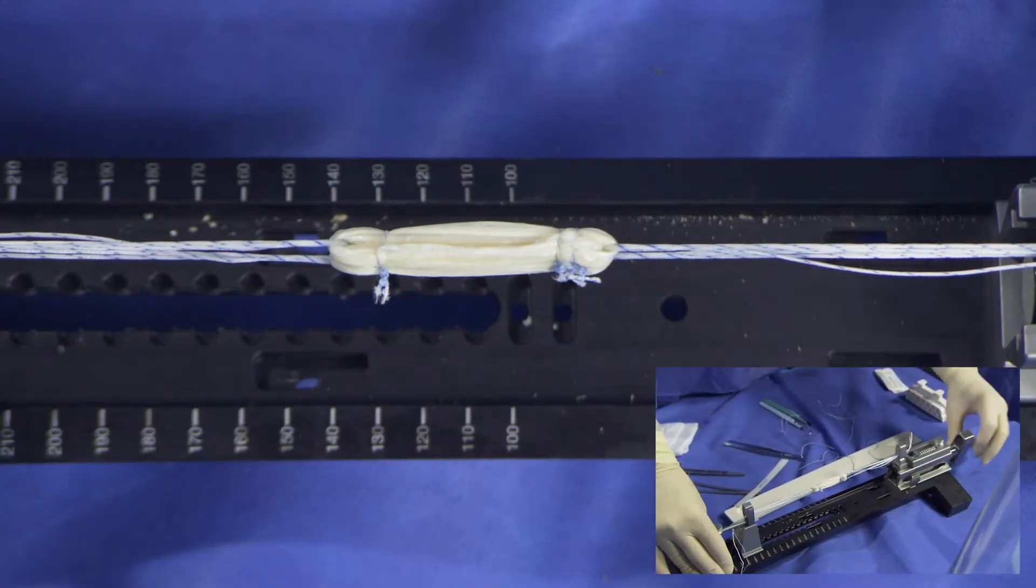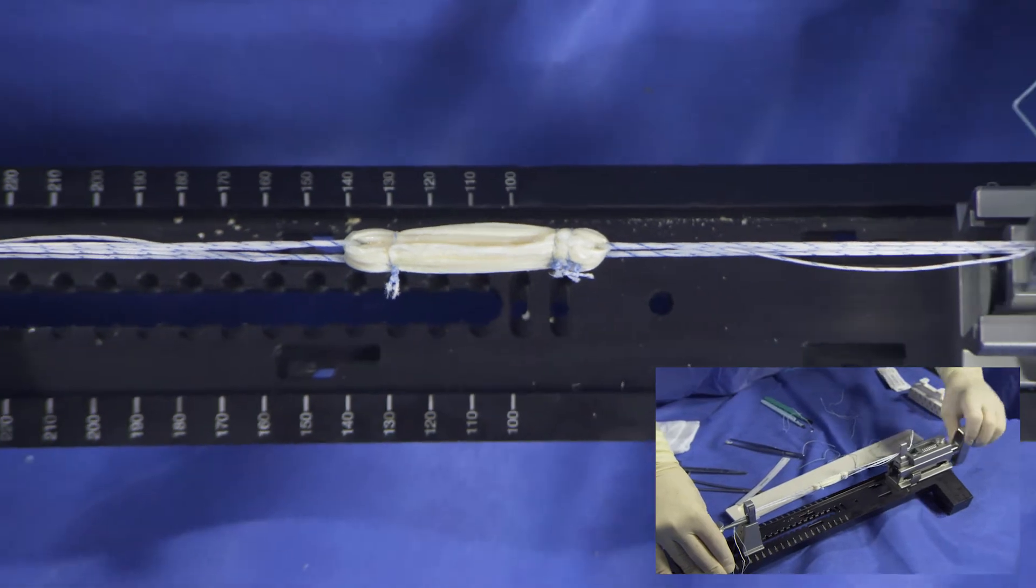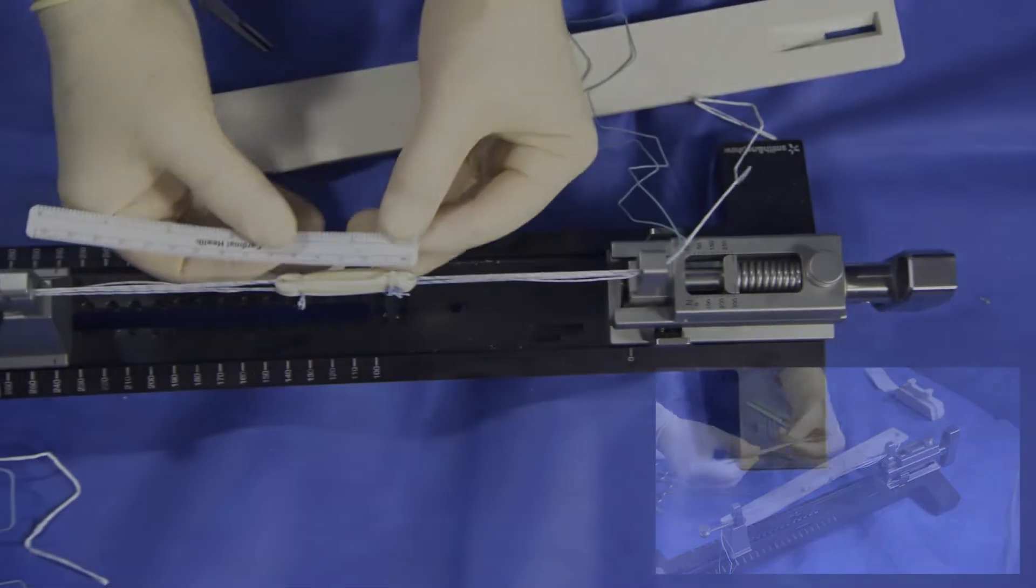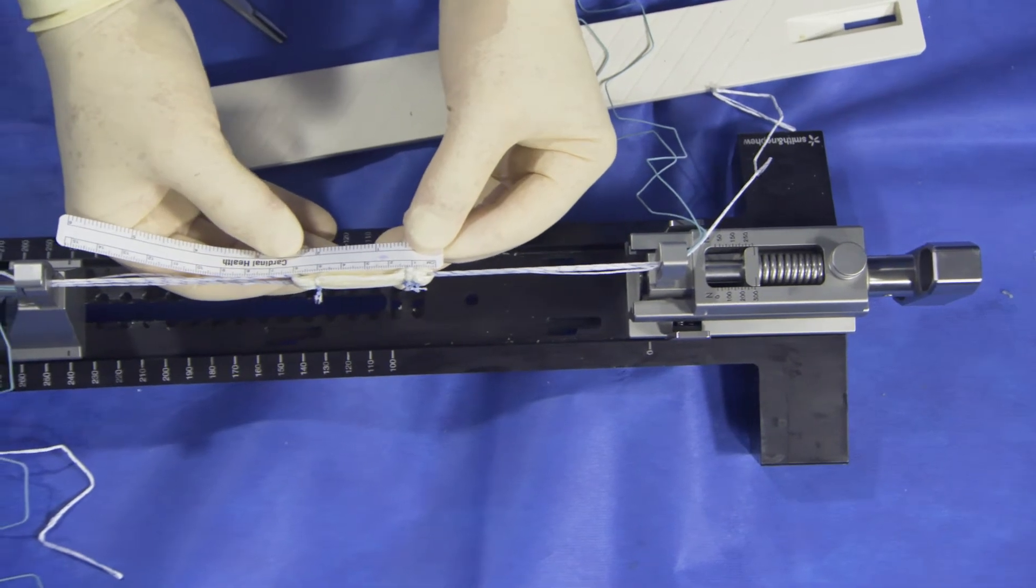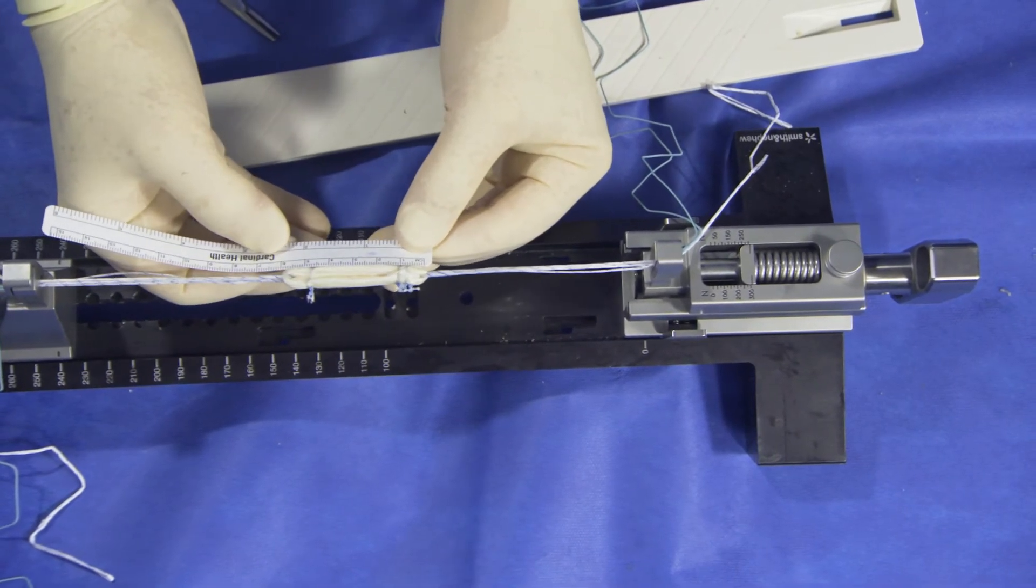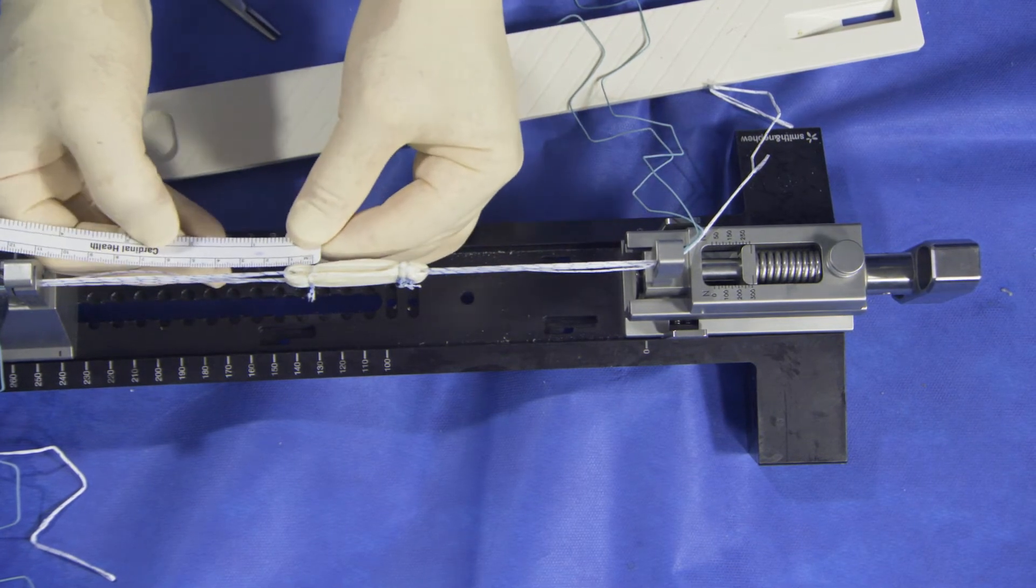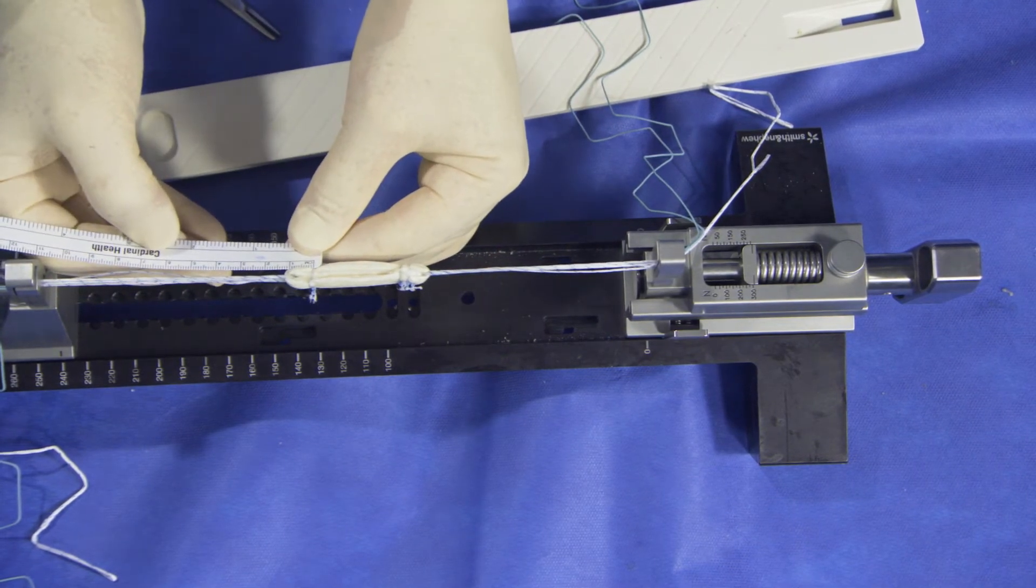Tension is then added to the graft up to 300 newtons for one minute to remove laxity of the interfaces that can occur with tension later on. The graft is then measured. This graft is 60 millimeters with approximately 12 millimeters for either end.